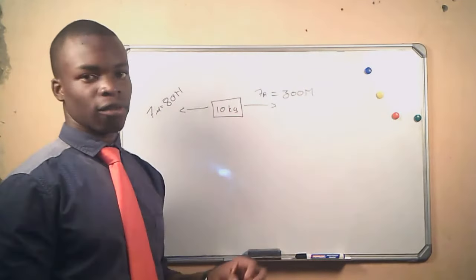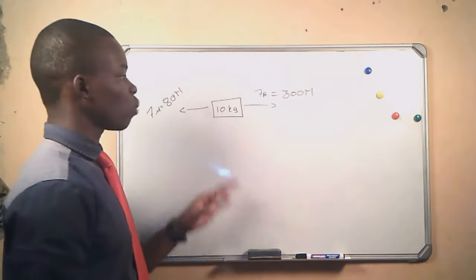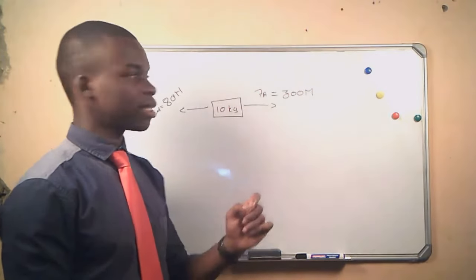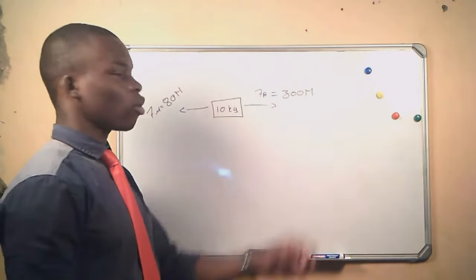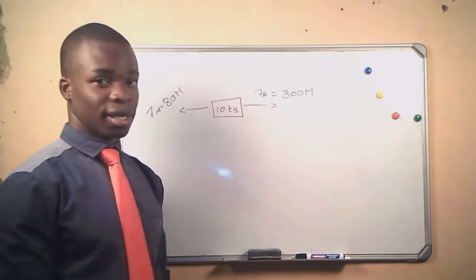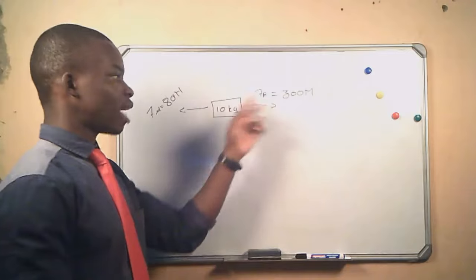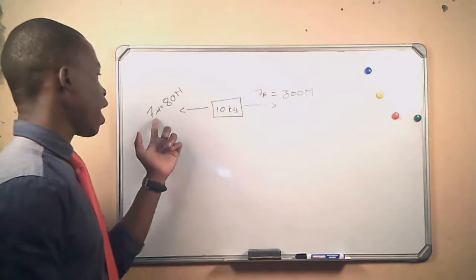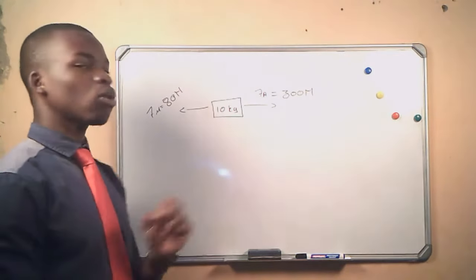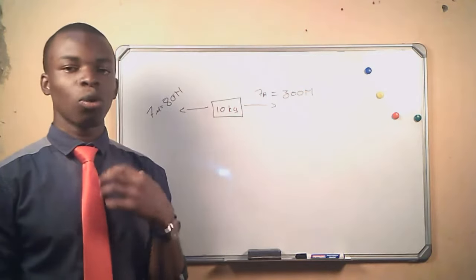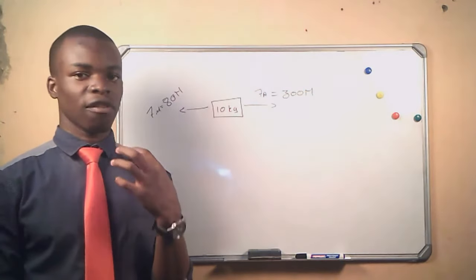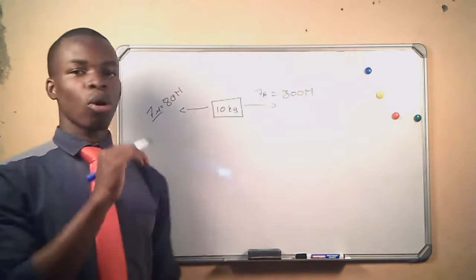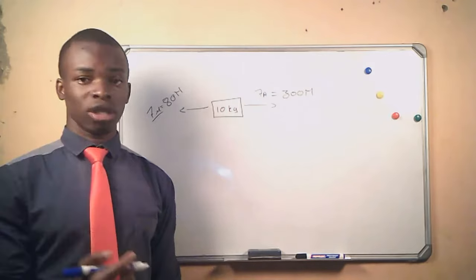We are given the mass of the box, and we are told that the box is being pulled to the right with a force of 300 newtons — that will be our applied force. We also have the force that opposes the motion of the box, which is the frictional force. We know frictional force always opposes motion.